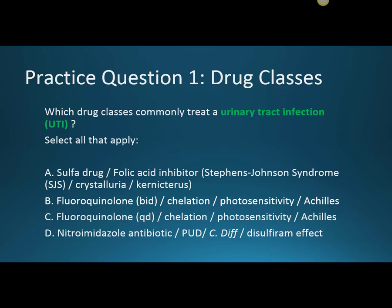Practice question one: which drug classes commonly treat a urinary tract infection? Select all that apply. When I think of the sulfa drug folic acid inhibitor and trimethoprim, I immediately think Stevens-Johnson syndrome with the sulfa drug, drinking a lot of water to avoid crystalluria, or bilirubin in the brain in young infants. With trimethoprim, I think of hyperkalemia — it struggles to get renal excretion of potassium.